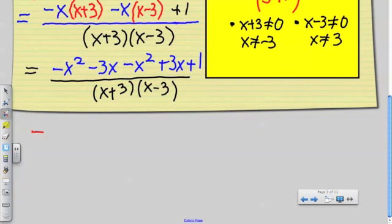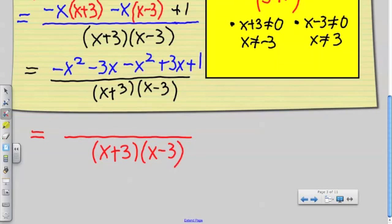So, by combining like terms, what is my final numerator going to be? By combining like terms, can someone tell me what is my final answer for the numerator? Positive 1 is part of it. Is there anything else? Yes. Negative 2x squared plus 1. Negative 2x squared plus 1. Because the negative 3x and the positive 3x cancel each other out. Can I factor the numerator?